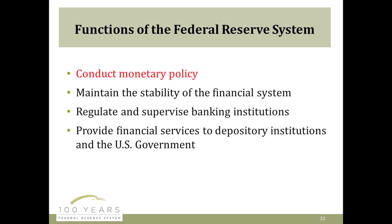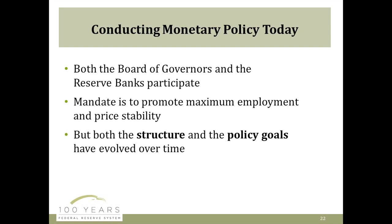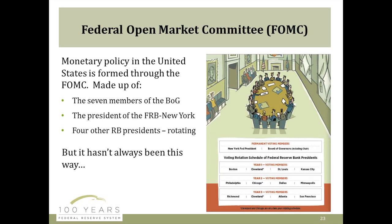Now I'm going to take a walk through those functions of the Federal Reserve System and give a historical context for how those have changed over the years, beginning with probably the one you think about the most — the conduct of monetary policy. A couple of ways to think about this: the structure of monetary policy involves both the Board of Governors and the Reserve Banks, and then also the goals of monetary policy. As of 1978, the goal is very explicitly to promote maximum employment and price stability. Both that structure and the goals have changed over time.